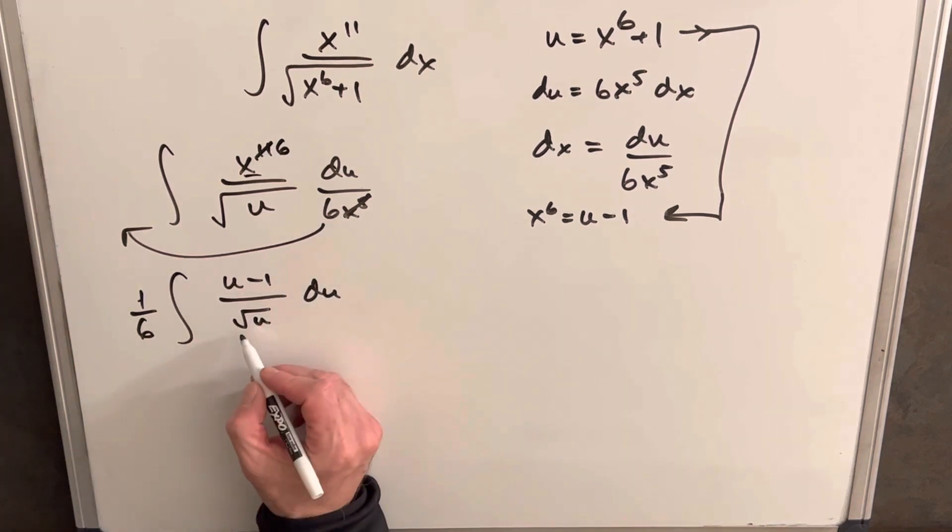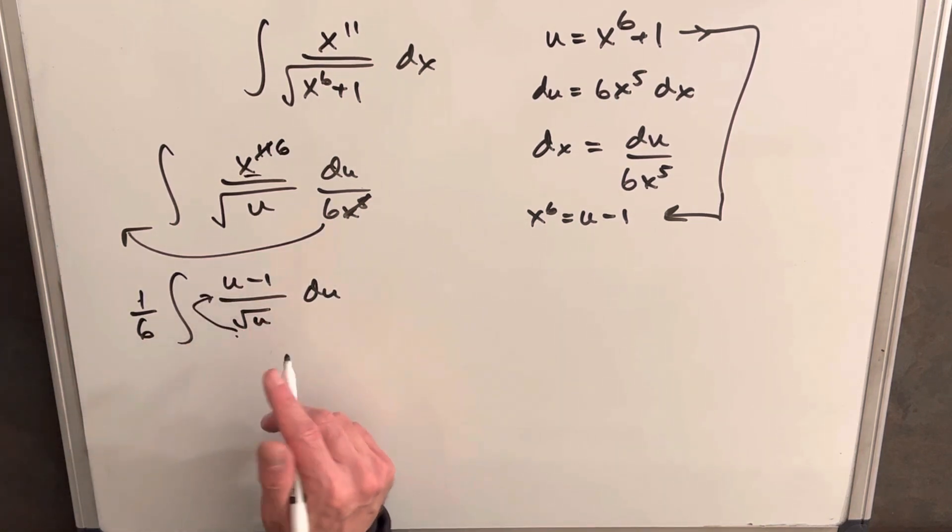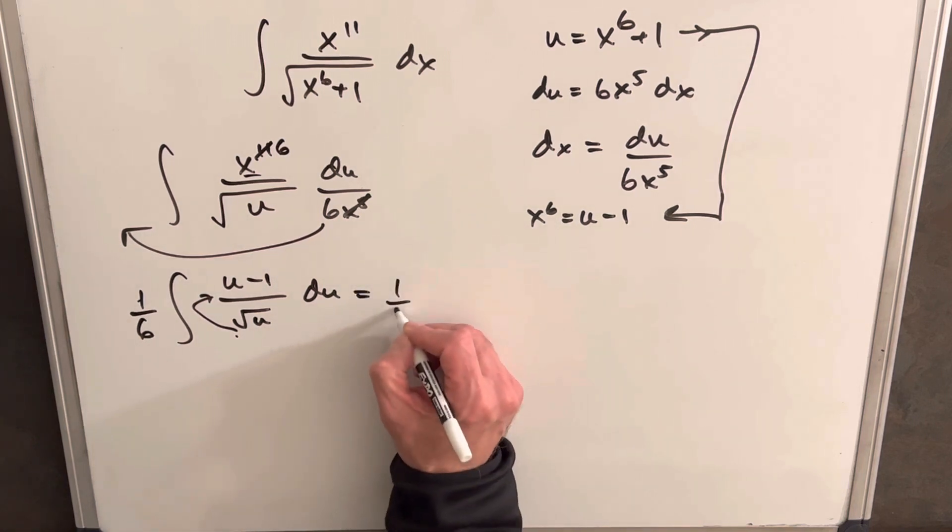And this is nice, because if we just divide this into the numerator here, we're going to be able to use the power rule. So let's do that.